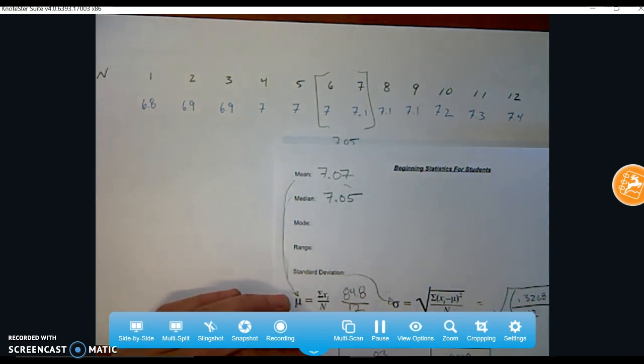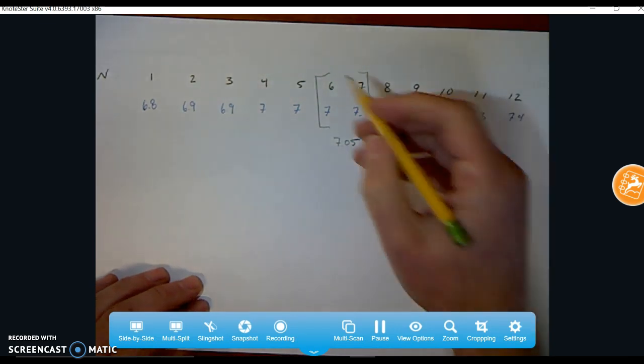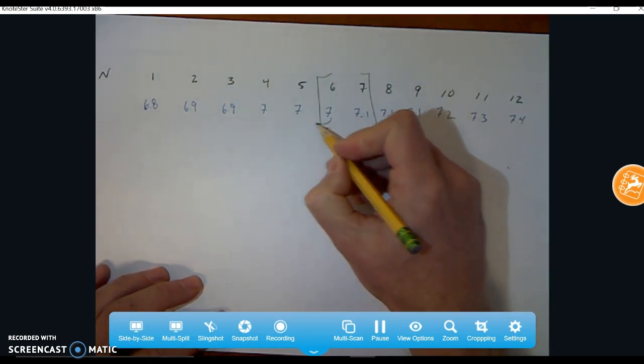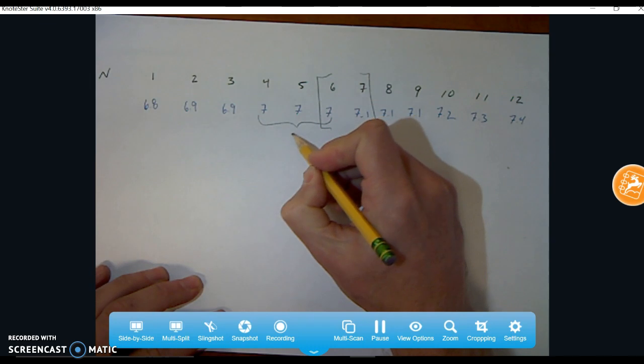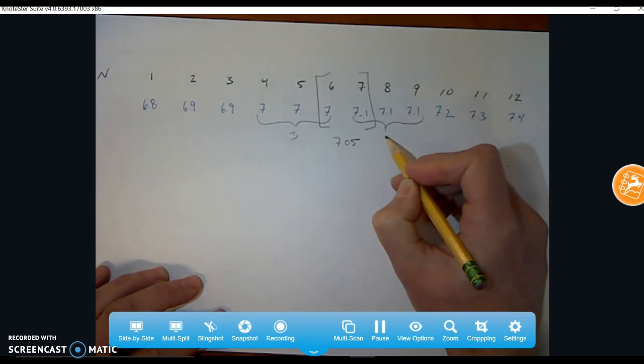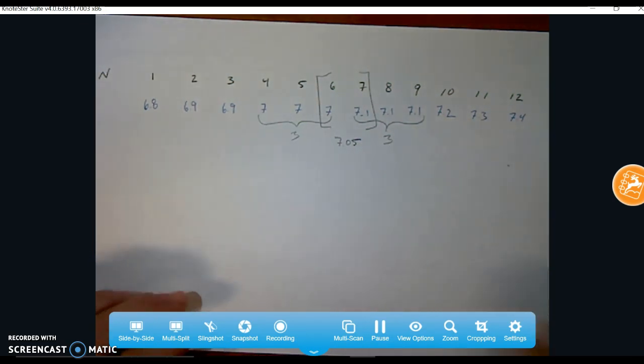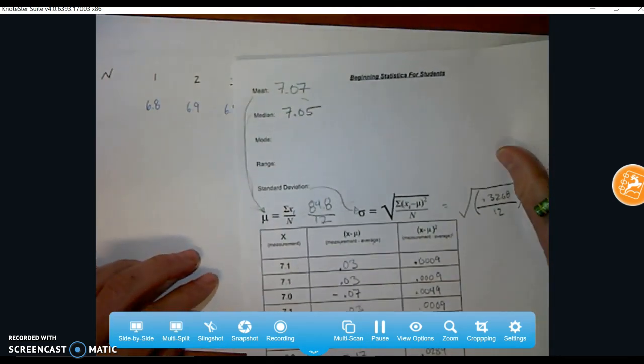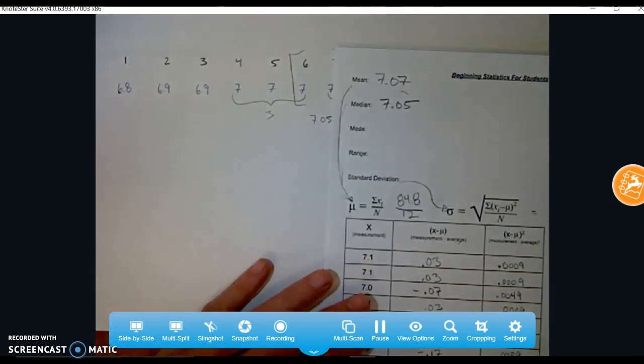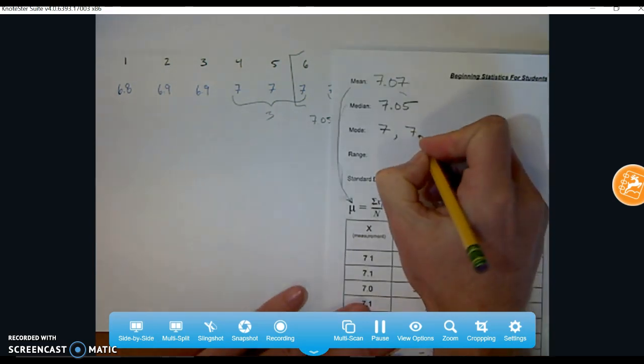Next, we'll do the mode. The mode is the number that occurs most often. And in this data set, I think we've got two, right? Seven pops up three times and 7.1 pops up three times. So in this case, there's two modes. And I would refer to this as being bimodal data. There's two things that pop up the same number of times. So the mode in this case for my data was 7 and 7.1.